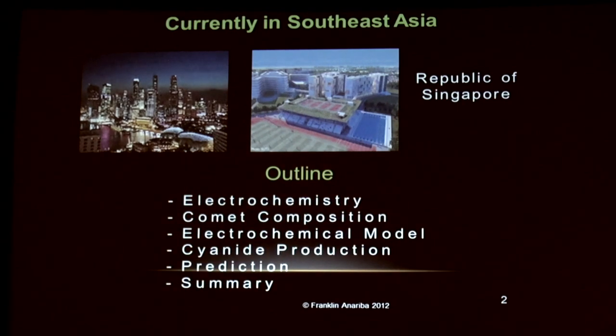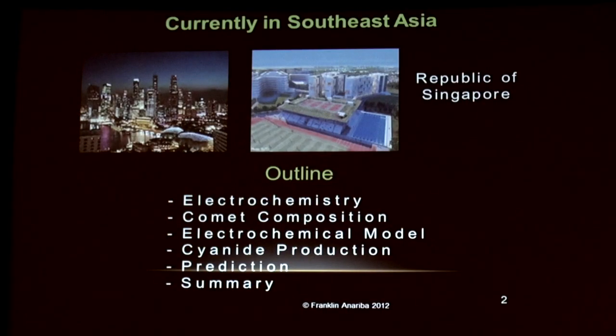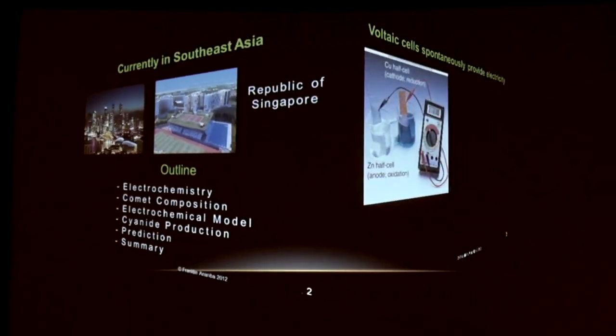All right. So this is the outline of my talk. It's going to be brief. And I'm going to keep it simple because the audience is very diverse. I'll tell you a little bit about what is electrochemistry, what is the composition of comets, and how the combination of these two concepts can actually allow us to provide a theoretical framework of reactions happening in comets. I'll also mention the electrochemical model in question. The question about cyanide production and how that model can actually explain this. And I'll just make one prediction. If this model is correct, there should be one observation that we should be able to see in the future.